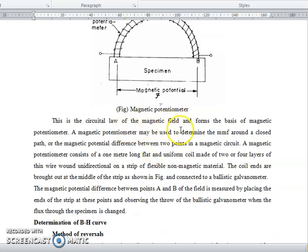This is the circuital law of the magnetic field and forms the basis of magnetic potentiometer. A magnetic potentiometer may be used to determine the MMF around a closed path or the magnetic potential difference between two points of the magnetic circuit. A magnetic potentiometer consists of one meter long flat and uniform coil made of two or four layers of thin wire wound unidirectionally on a strip of flexible non-magnetic material. The coil ends are brought out at the middle of the strip as shown and connected to a ballistic galvanometer. The magnetic potential difference between points A and B of the field is measured by placing the end strip at these points and observing the deflection through the ballistic galvanometer when the flux through the specimen is changed.